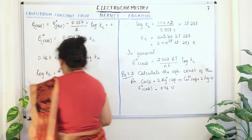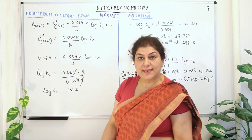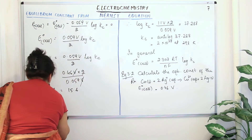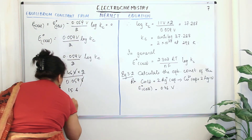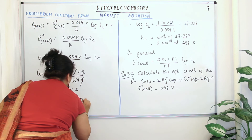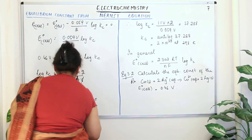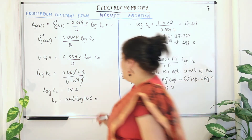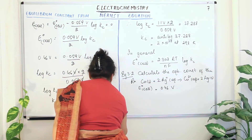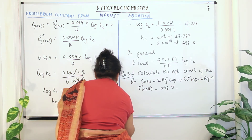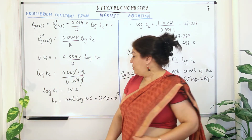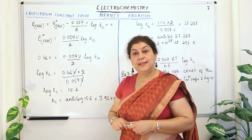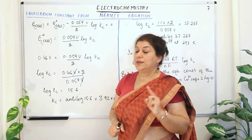Since log Kc = 15.6, Kc = antilog of 15.6 = 3.92 × 10^15. This was the solution showing how to calculate Kc — the equilibrium constant — from the Nernst equation.